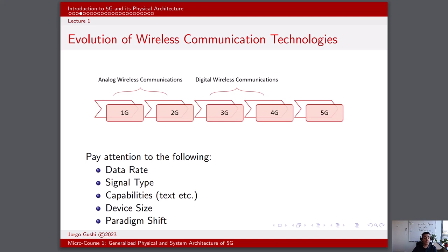Moving forward with 3G, or the third generation, which was introduced in the early 2000s. 3G enhanced data rates up to several megabits per second using technologies like UMTS, or Universal Mobile Telecommunication Systems, and CDMA 2000. The signal type included wideband CDMA and CDMA-based technologies for data transmission. Key capabilities included mobile internet access, video calls, and improved data services.